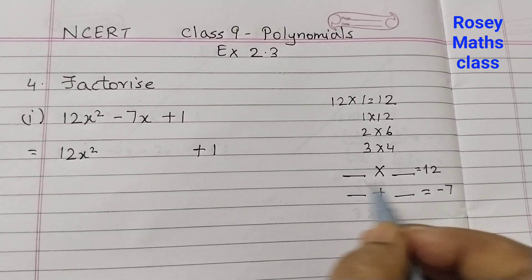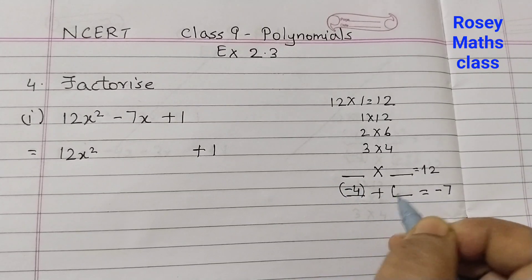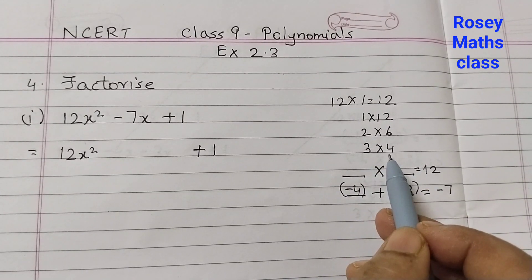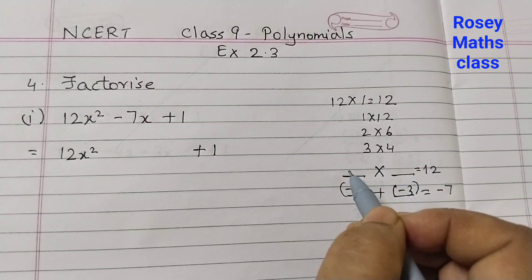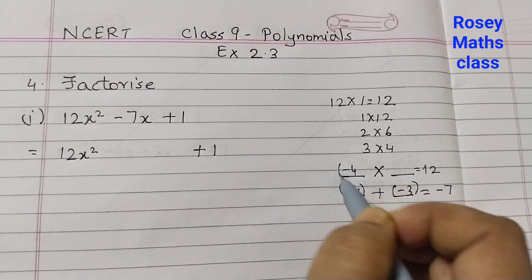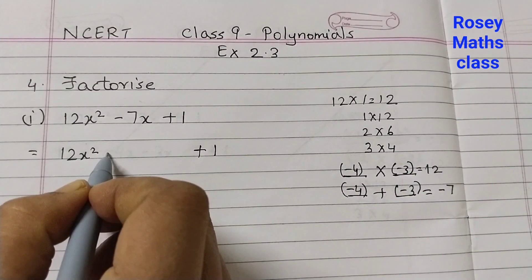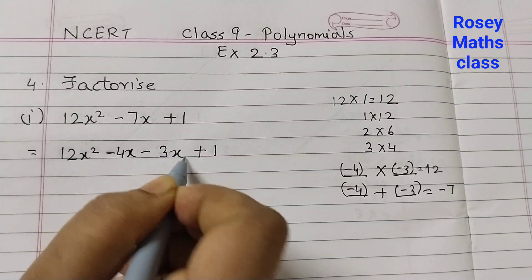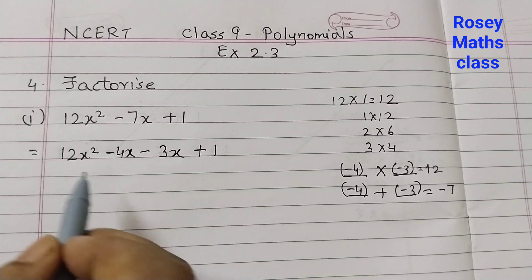Because there is a minus sign here, we will take minus 4 plus minus 3. This pair 3 and 4 — you can take minus 3 plus minus 4 or minus 4 plus minus 3, it is the same thing. And minus 4 into minus 3 is 12. So minus 4x minus 3x — now we got 4 terms.